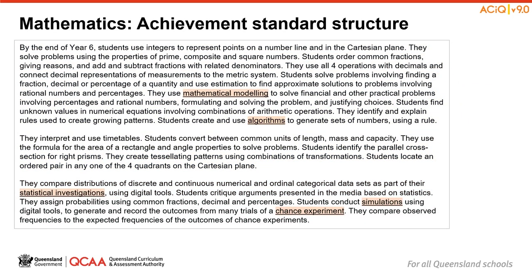Other important changes to the Version 9 Achievement Standard include the key considerations of the four mathematical processes mentioned in Session 1: Mathematical Modelling, Computational Thinking, Statistical Investigations, and Probability Experiments and Simulations — highlighted on screen in orange. The other important change is the inclusion of key considerations involving the use of digital tools in the mathematics curriculum. In this Year 6 example, the use of digital tools has been bolded.